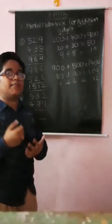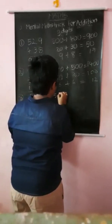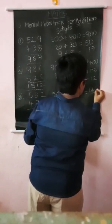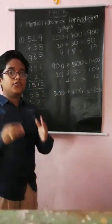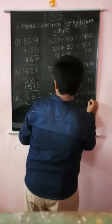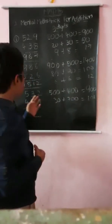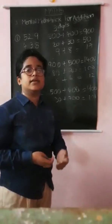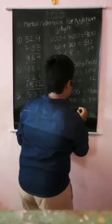In the hundreds place, the number is 5 and downwards the number is 4. Then 500 plus 400 is 900. In the tens place, the number is 3 and downwards the number is 7. You know that 30 plus 70 is 100. Then in the ones place, the number is 2 and downwards the number is 9. 9 plus 2 is 11.